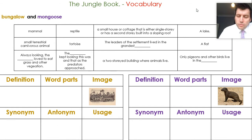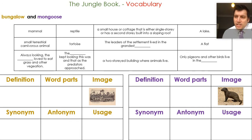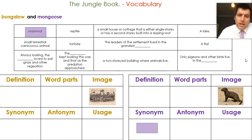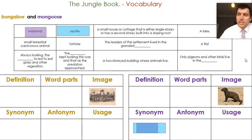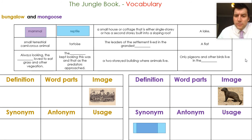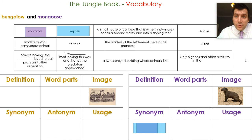Complete those grids — that's your first or second task if you've already done the correct and incorrect direct speech recall. With mammal, you might think it's a synonym for mongoose. However, you might also think reptile is a synonym. Using your science knowledge and classification work, you know an animal can't be both a mammal and a reptile, so you've got to identify which one it is. If you need to do some research or find a dictionary, that might help a little bit.